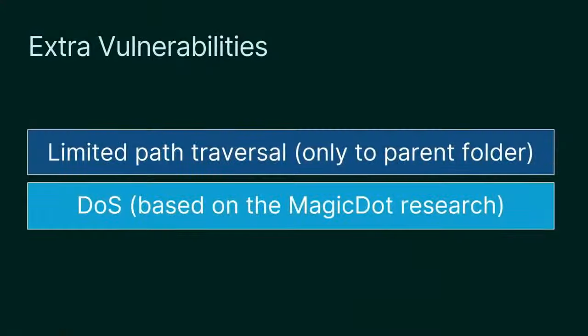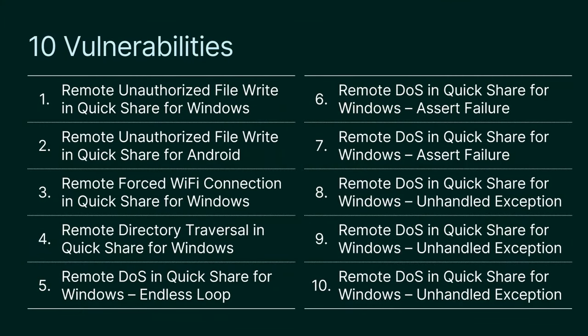We discovered two additional vulnerabilities: one allowed sending a file to the parent folder of the downloads folder, and another let us crash QuickShare by leveraging some findings from OAMagic's research presented last April. However, these vulnerabilities were not used in the RCE chain and could not be exploited for remote code execution. We'll share more details in our upcoming blog post. Overall we identified 10 distinct vulnerabilities along with an additional bug in Chrome.